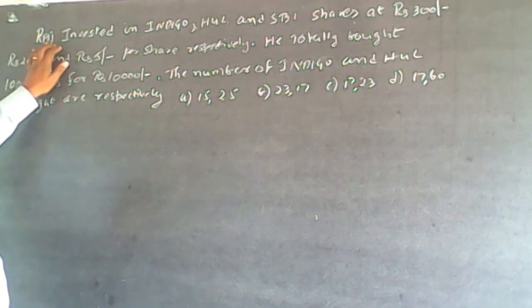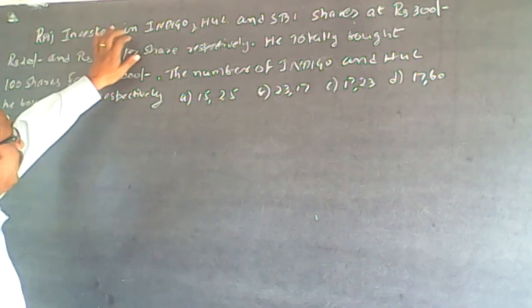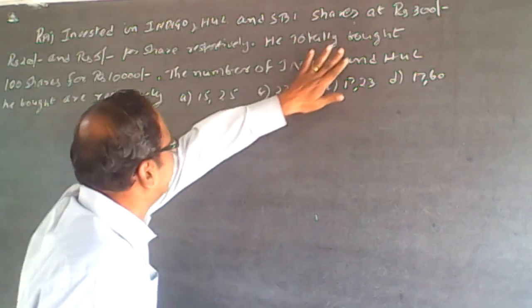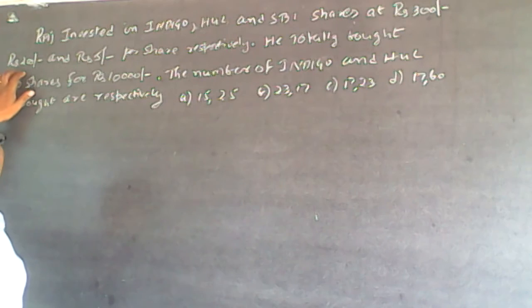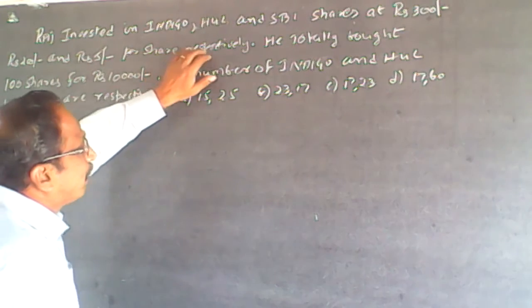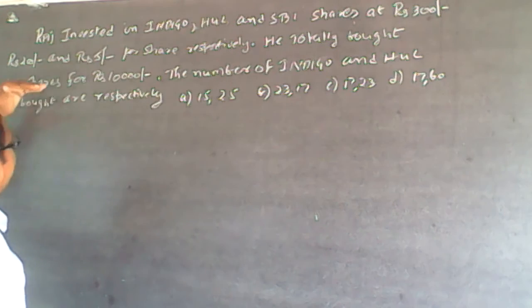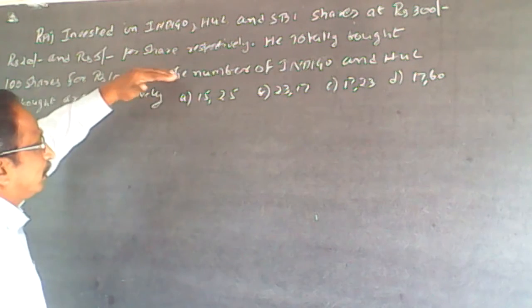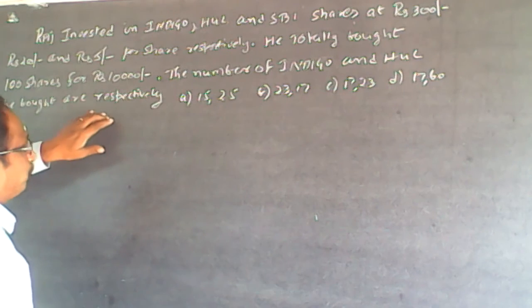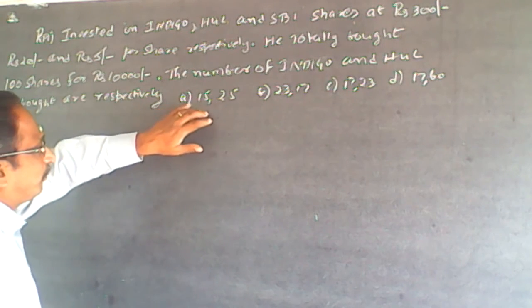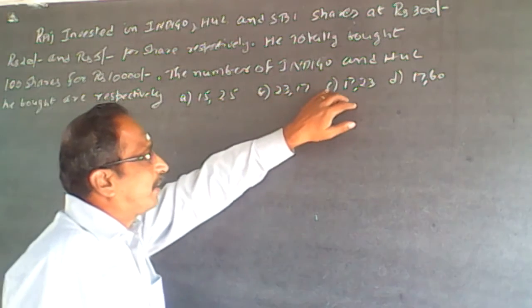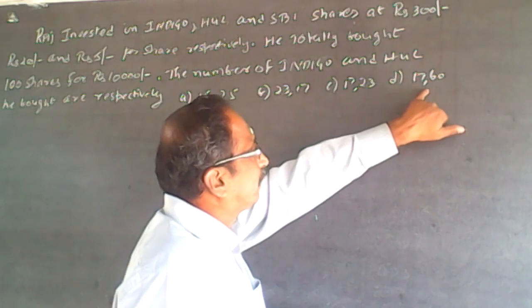The question is: Raj invested in Indigo, HUL, and SBA shares at Rs. 300, Rs. 200, and Rs. 5 per share respectively. He totally bought 100 shares for Rs. 10,000. The number of Indigo and HUL shares he bought are respectively: A. 15-25, B. 23-17, C. 17-23, and D. 17-60.